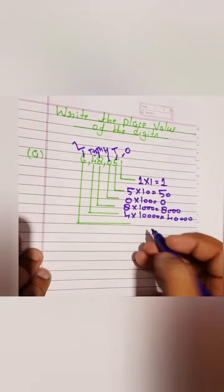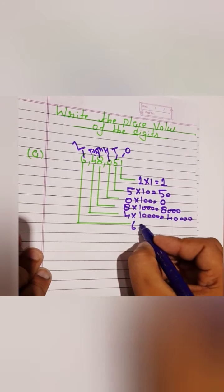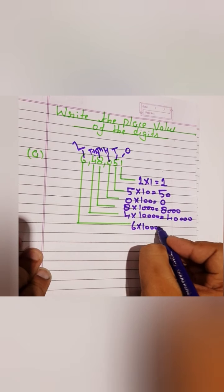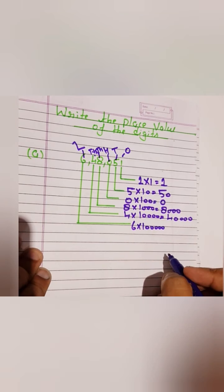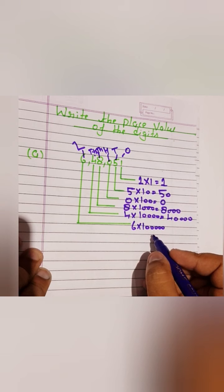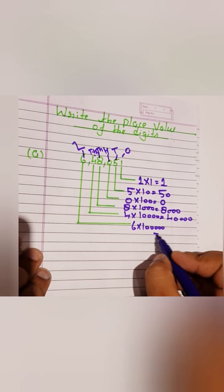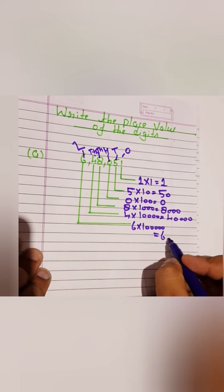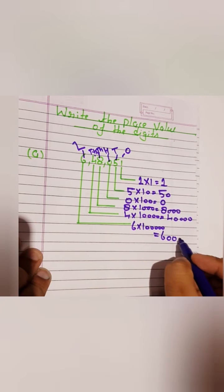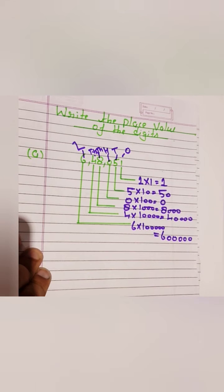Six lakh में था. Six का multiply हमने lakh में कर दिया — one, two, three, four, five — लाखों में, तो हमारा आया six lakh. Clear.